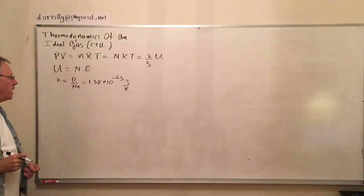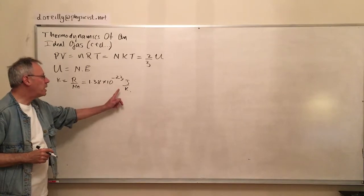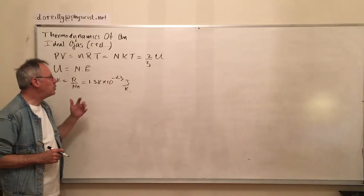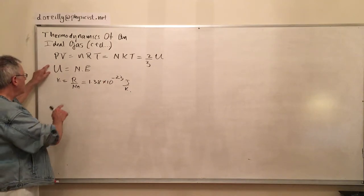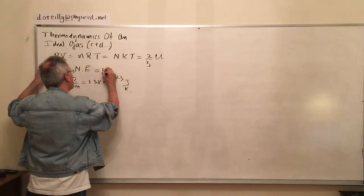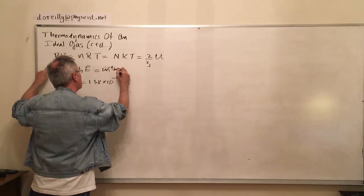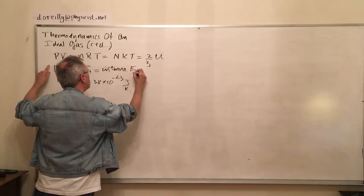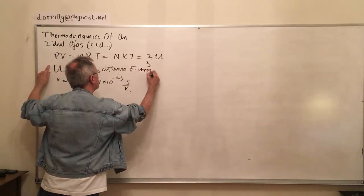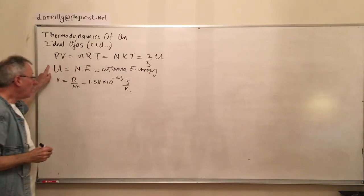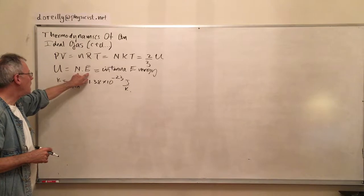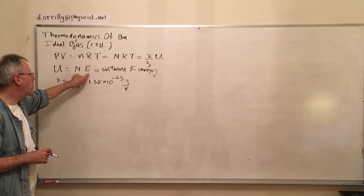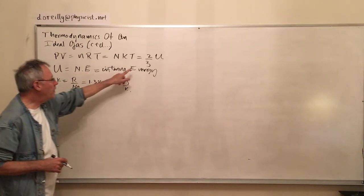It's 1.38 by 10 to the power of minus 23 joules per Kelvin, the measure of the number of joules per Kelvin per particle. So the internal energy U, we look at the internal energy in terms of the total number of particles times the average kinetic energy per particle.